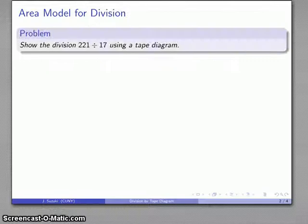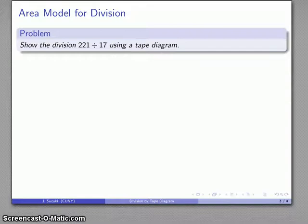And so this leads to an area model which I can use in the following way. So let's consider the division 221 divided by 17 and I'll use a tape diagram to represent this area model. Tape diagrams are really interchangeable terms.